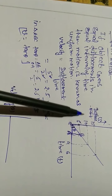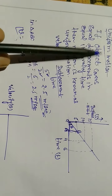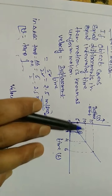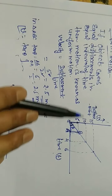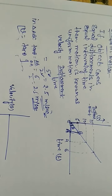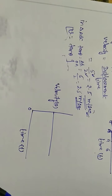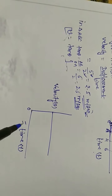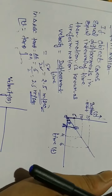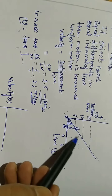So the slope of the displacement-time graph in uniform motion gives the value of velocity. This is the displacement-time graph for uniform motion. Now let's look at the velocity-time graph. In this diagram, you can see the velocity throughout the motion remains unchanged — it is constant throughout.